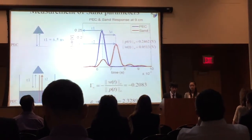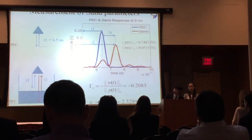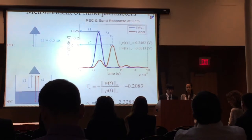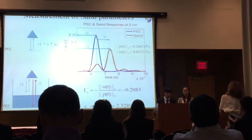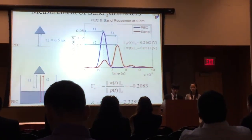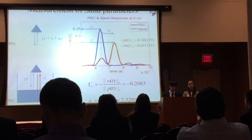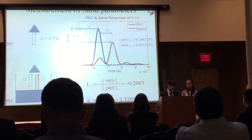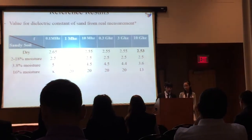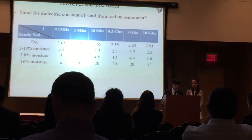Here are some results for the measurement of the sand dielectric constant. In this measurement, we measured a sand layer with a thickness of 9 cm. T1 is the round-trip delay of the signal to the first interface of the sand, and delta-T is the time it takes for the signal to travel through the medium. From these values, we can measure the reflection coefficient of the sand as well as calculate its dielectric constant. We compared with reference results and it matches pretty well.